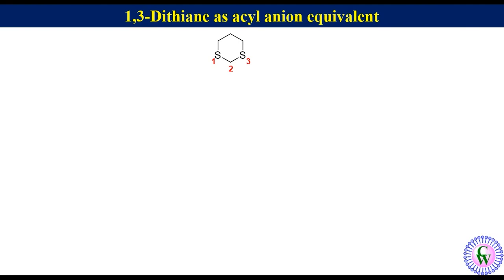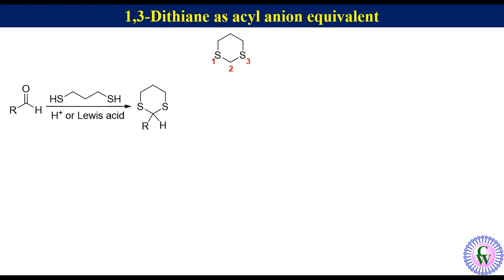It acts as a stable protecting group for aldehyde. An aldehyde reacts with propane-1,3-dithiol in the presence of protic or Lewis acid to produce 1,3-dithiane or 2-substituted 1,3-dithiane, depending upon whether the starting material is formaldehyde or any other aldehyde.